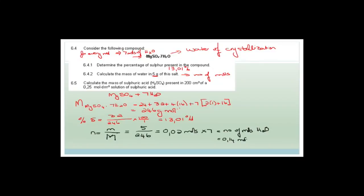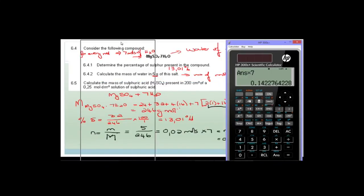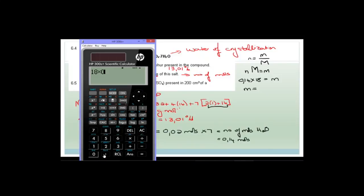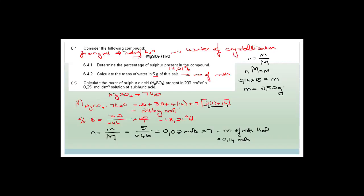To find the mass, we use: mass equals number of moles times molar mass. The molar mass of water is 2 plus 16, which is 18 grams per mole. So the mass equals 0.14 multiplied by 18, which equals 2.52. Therefore, 2.52 grams of your 5 gram salt sample is water.